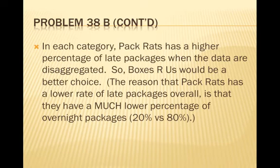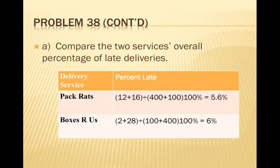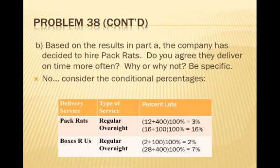In each category, Pack Rats has a higher percentage of late packages when the data are disaggregated, so Boxes R Us would be a better choice. The reason Pack Rats had a lower overall late rate is that they had a much lower percentage of overnight packages — only 20% versus Boxes R Us's 80% overnight. Overnight packages are harder to deliver on time. To make it fair, both companies should have handled the same mix of 400 regular and 100 overnight packages.